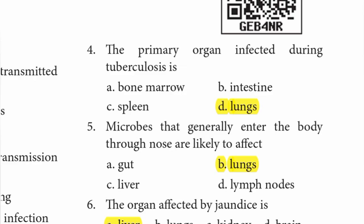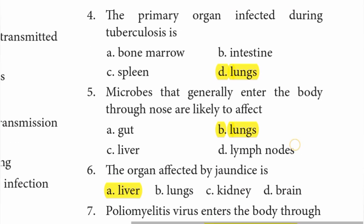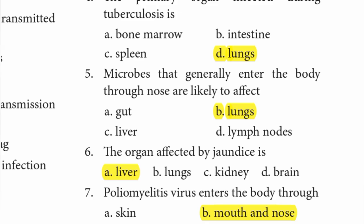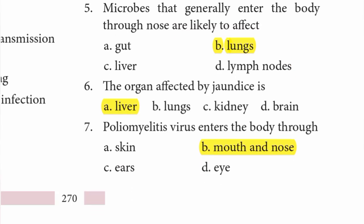Number five — microbes that generally enter the body through the nose are likely to affect the gut, liver, lungs, or lymph nodes? The right answer is lungs.